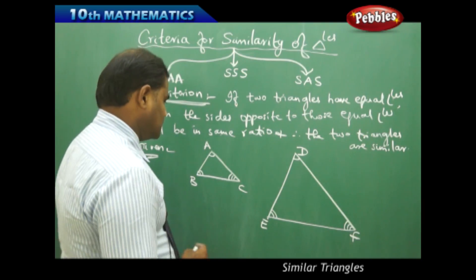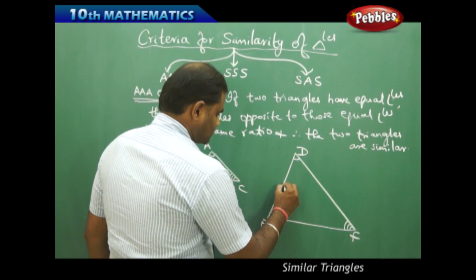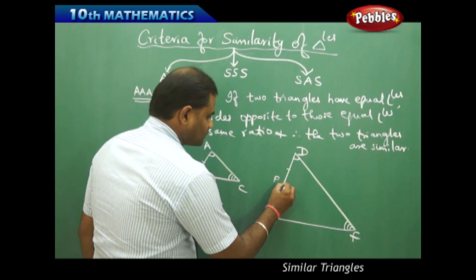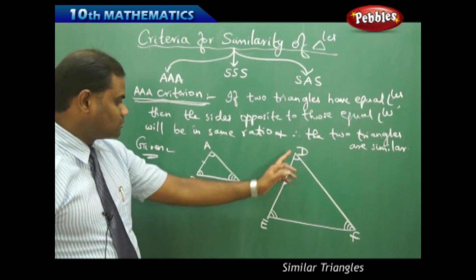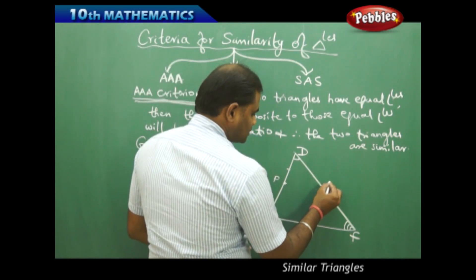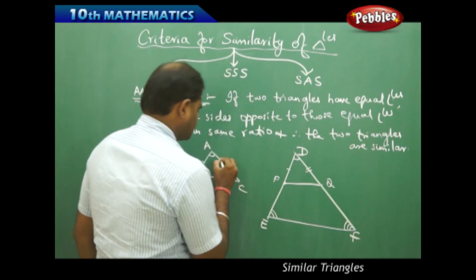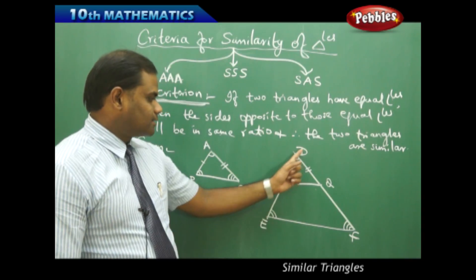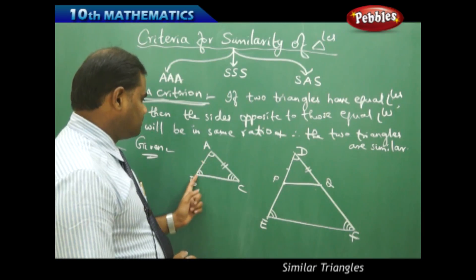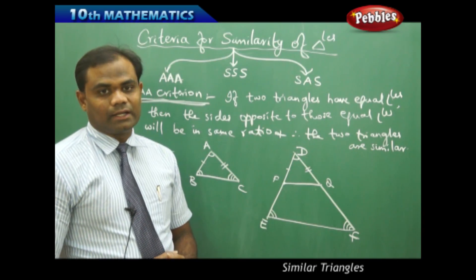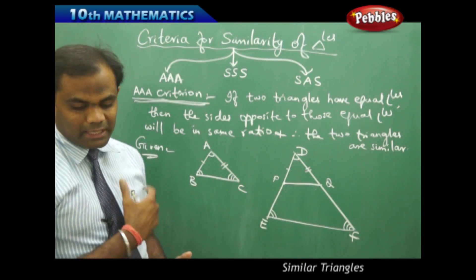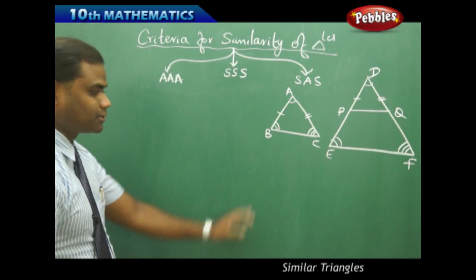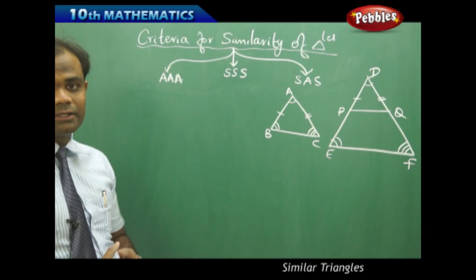To do this, I take the distance AB and cut an arc on line segment DE to get a point P such that AB equals DP. Similarly, I take AC and mark point Q on DF such that AC equals DQ, giving a triangle where these sides are equal. Comparing triangles DPQ and ABC, we get AB = DP, AC = DQ, and corresponding angles are equal. Let's now derive the actual proof of the AAA criterion.